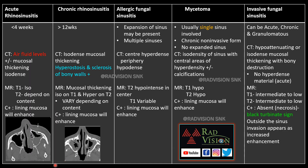Regarding infective fungal sinusitis: acute rhinosinusitis is seen in less than 4 weeks. Air-fluid levels are pathognomonic on CT with or without mucosal thickening. T1 iso-intense and T2 variable signal intensity is seen depending on content. Chronic rhinosinusitis is seen after 12 weeks. On CT, hyperostosis and sclerosis of the adjacent bony walls are pathognomonic. On MRI, T1 iso-intensity and T2 hyper-intensity is seen, varying depending on content.